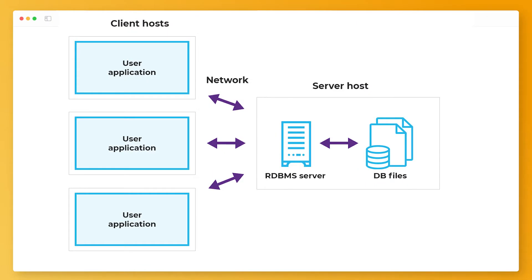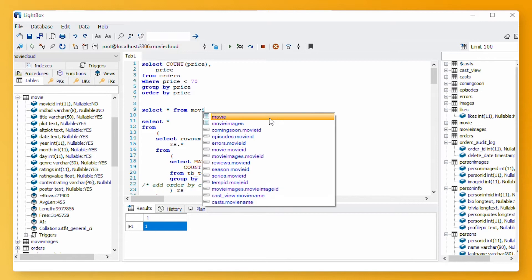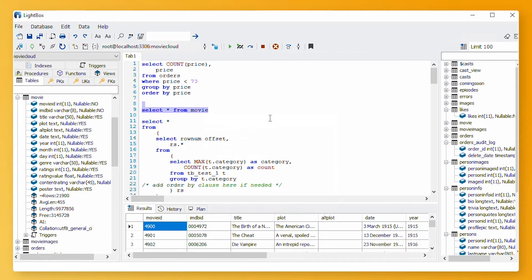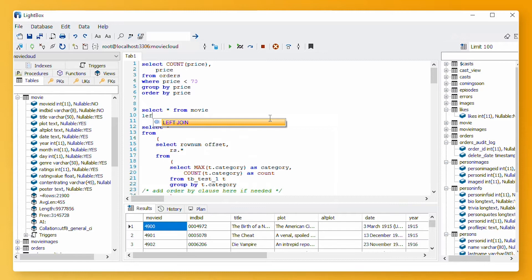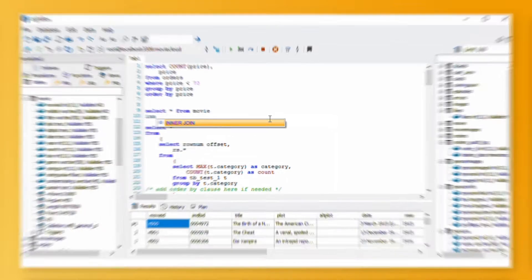MySQL works with the client-server connection model. Computers that install and run RDBMS software are called clients. Whenever the clients need to access data, they connect to the RDBMS server, and that connection happens through a specific network. Every client can make a request from their graphical user interface (GUI) on their screens, and the server will produce the desired output as long as both ends understand the instruction.